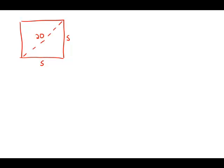I'm going to talk about two ways to think about this problem. First of all, it should be clear from the diagram that whatever the length of the diagonal is — 20 — that has to be larger than the side of the square. We know that the perimeter is going to be 4 times S, but that's going to have to be less than 4 times 20, which is 80, because the side has to be less than 20.